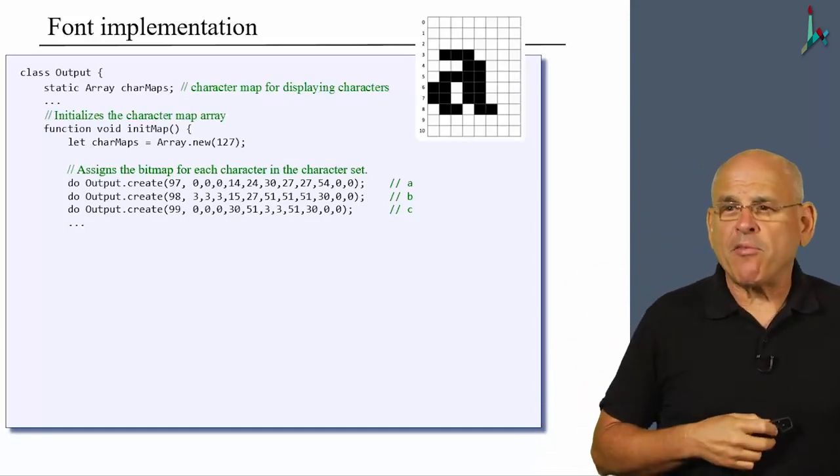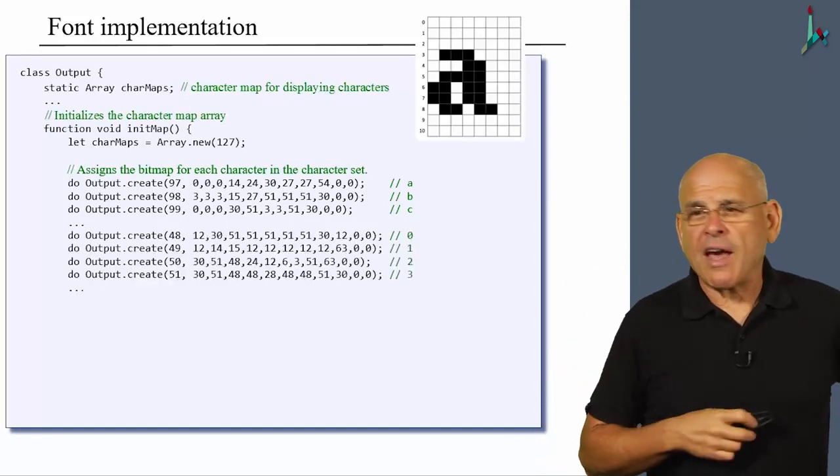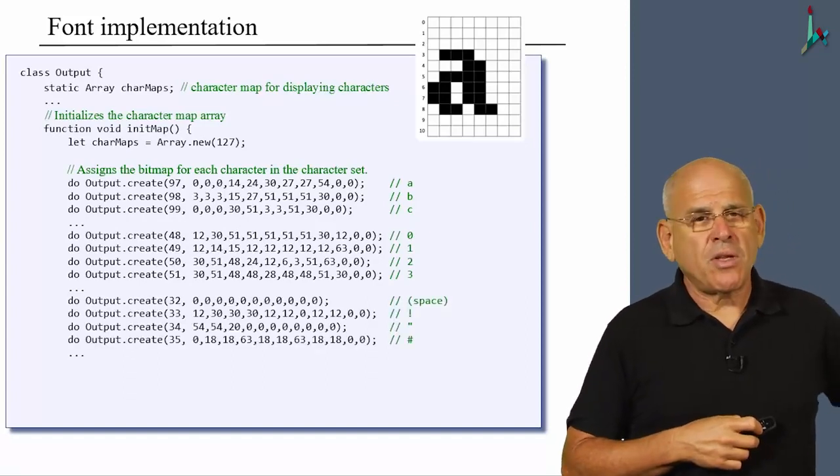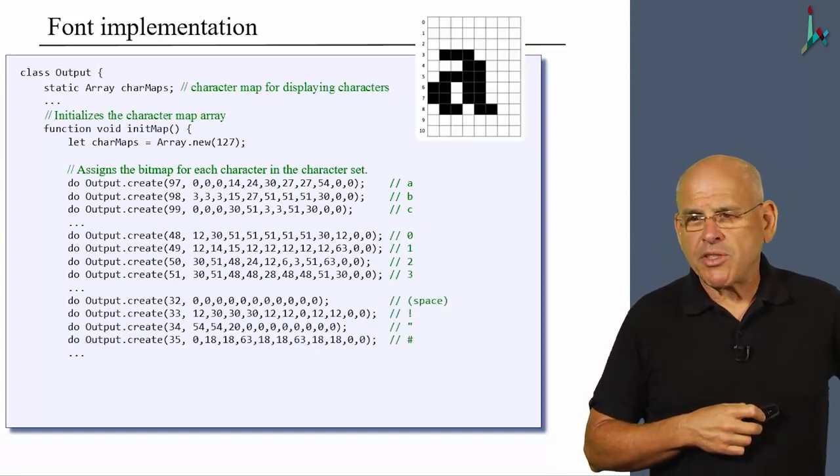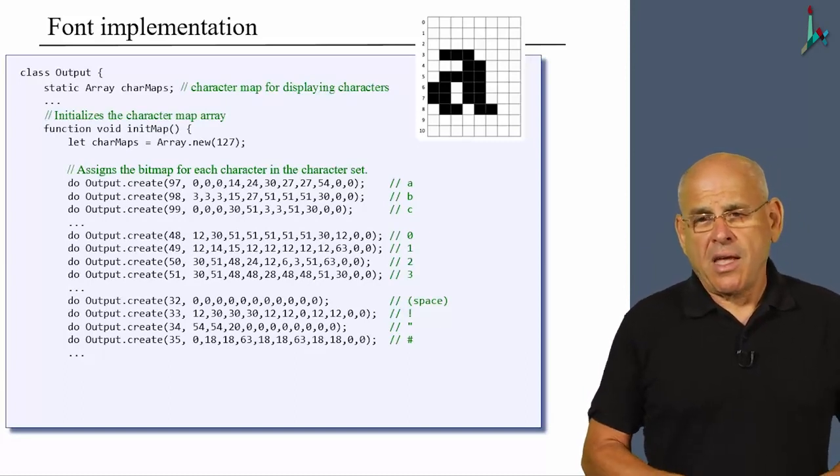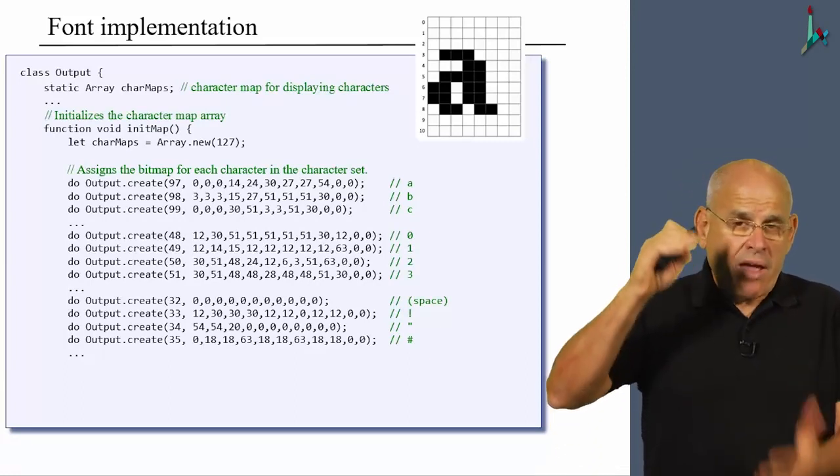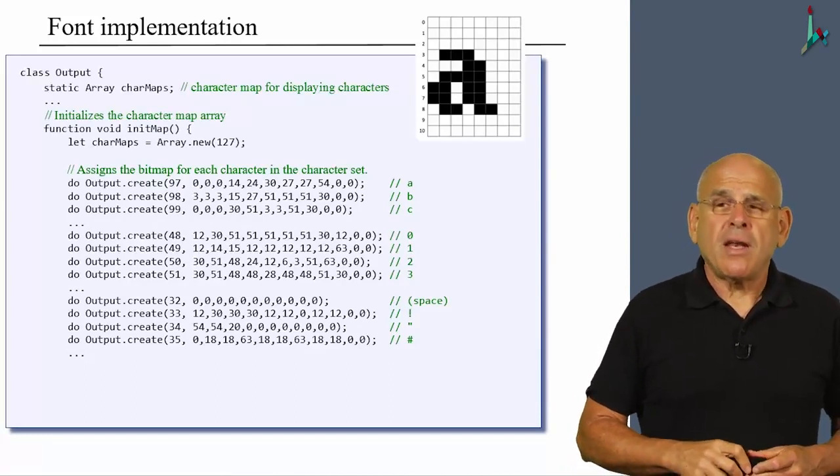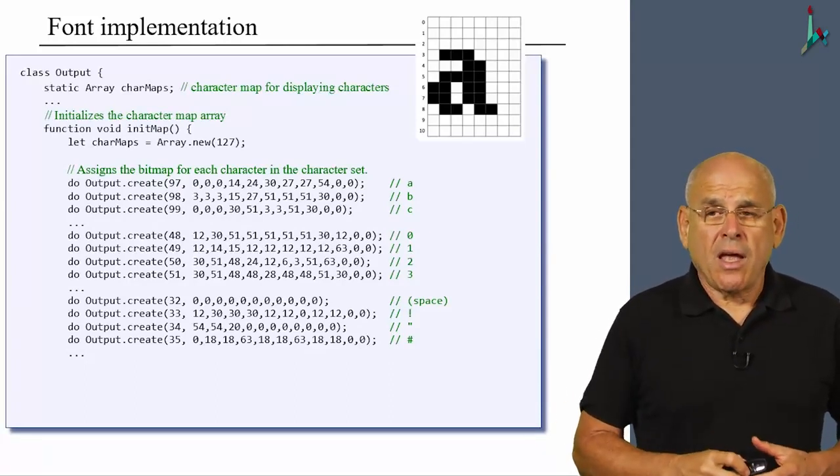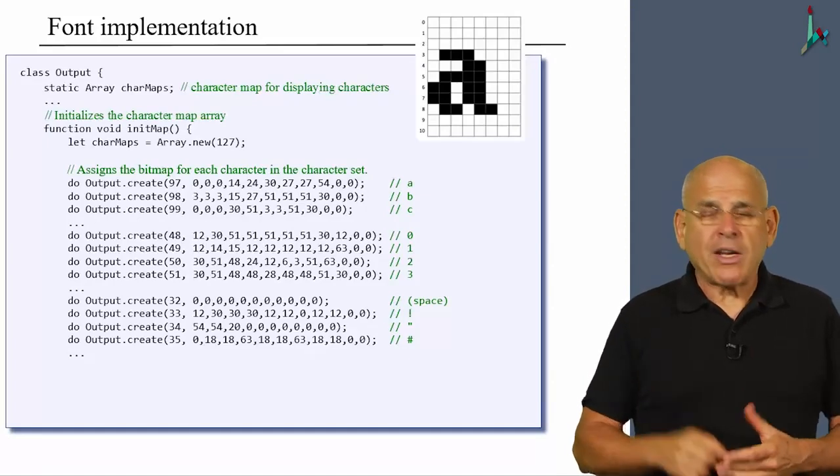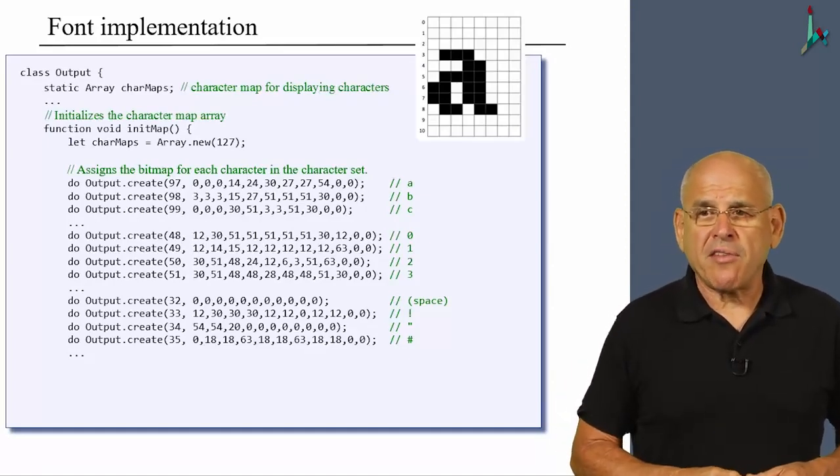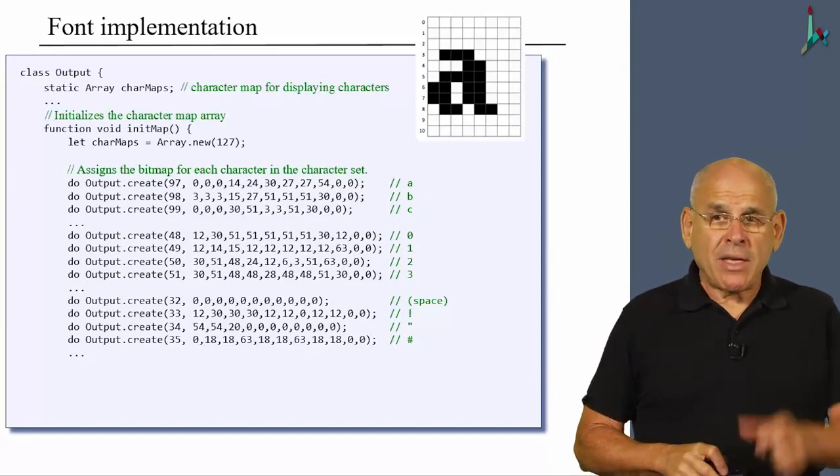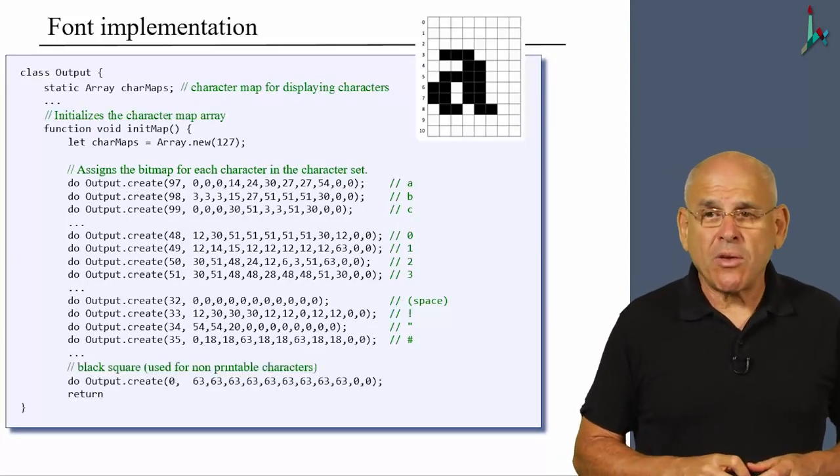So that's how we define the bitmap of A. Then we define the bitmap of B, C, all the other letters in the alphabet. Then we do the digits. Then we do all the special characters. And that's it. If you look at the code, which is available to you if you downloaded the Nand to Tetris software suite, you will see that we actually worked hard to create this font.